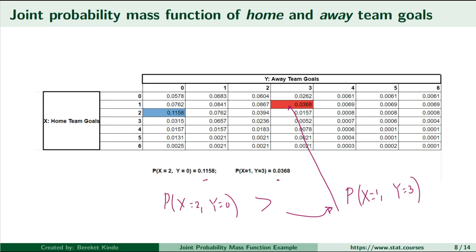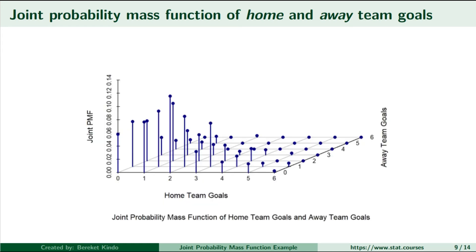We can graphically display the joint probability of two random variables. Since the number of dimensions has increased by 1 compared to the univariate random variable case, we now have to do it using a three-dimensional plot. On the x-axis you have home team goals, on the y-axis you have away team goals, and the vertical lines standing on specific points are the joint probability masses for those points.